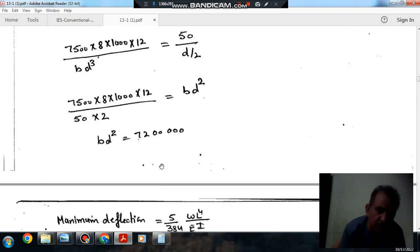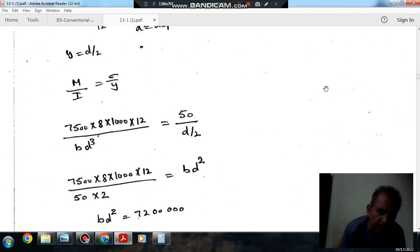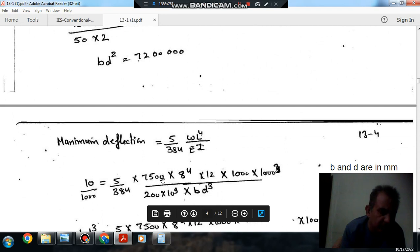The moment is N per meter, so this is 7500. And L is 8 meters, so this is 8 to the 4, and I is BD cubed by 12, so this is BD cubed by 12.